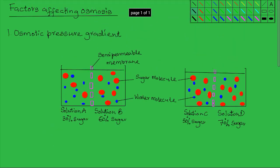We start by looking at the osmotic pressure gradient. Osmotic pressure gradient refers to the difference in the osmotic pressure between two solutions that are separated by a semi-permeable membrane. You will recall that osmotic pressure is the tendency of a solution to take in water from another solution. The osmotic pressure is determined by the solid concentration, whereby the higher the solid concentration, the higher the osmotic pressure.